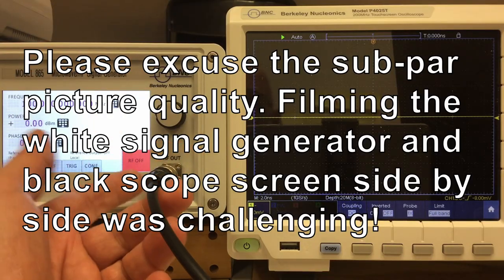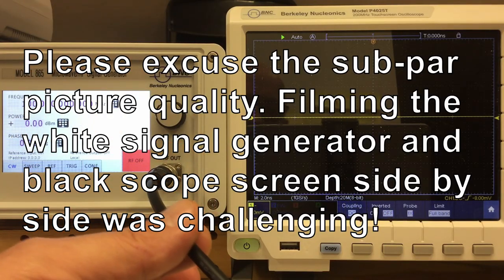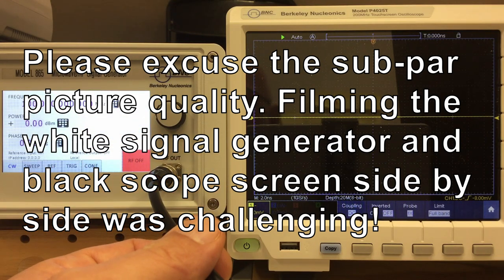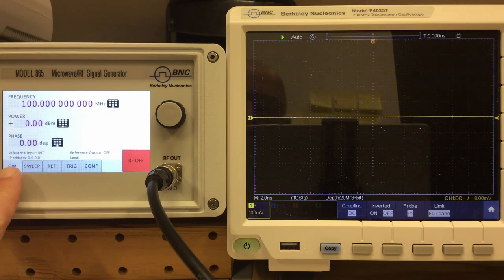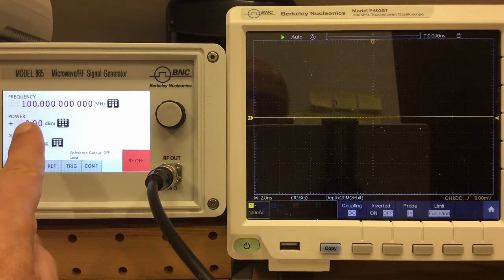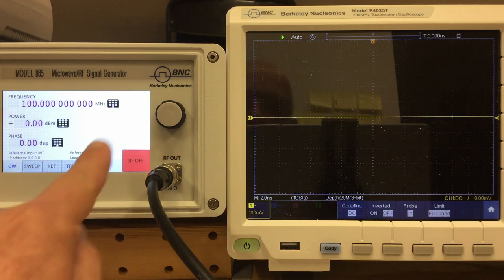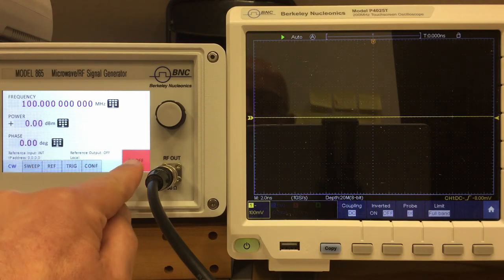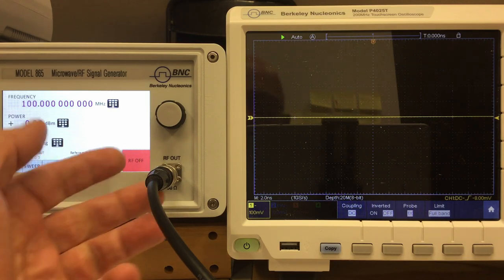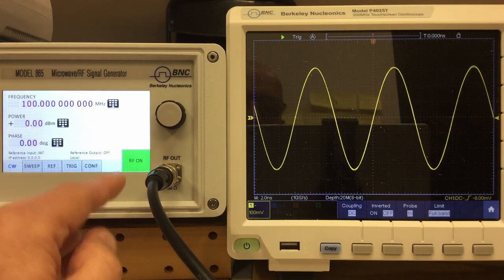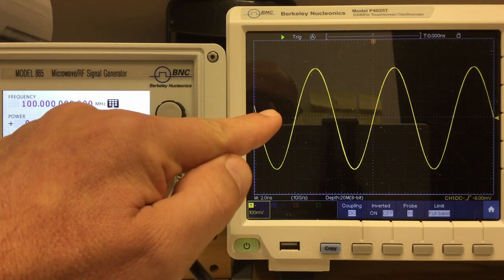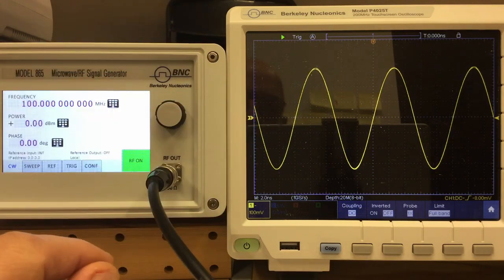I connected the oscilloscope with a little adapter and a BNC cable with a 50-ohm terminator at the end. After you power up the unit, you will find yourself in the continuous wave menu or CW menu. You have basically three parameters here: frequency, power, and phase, and that big red RF off button. When we touch it, it will switch on the RF output and get green RF on, and we have the output signal from the unit on the scope.